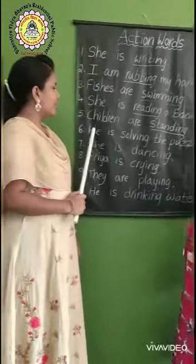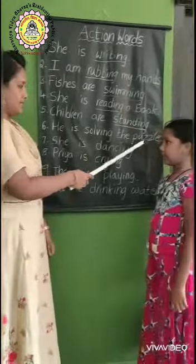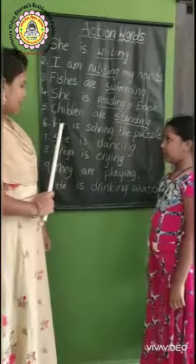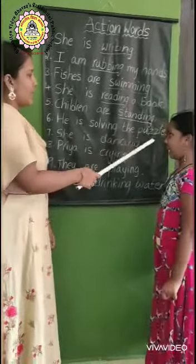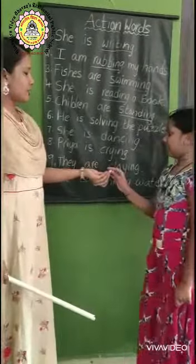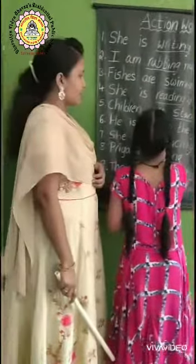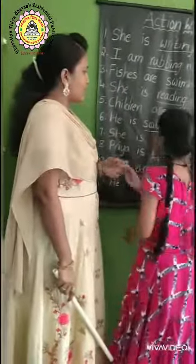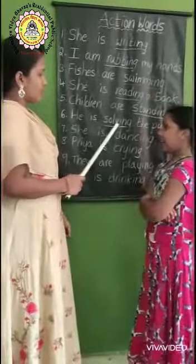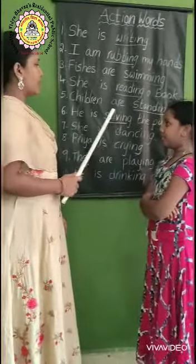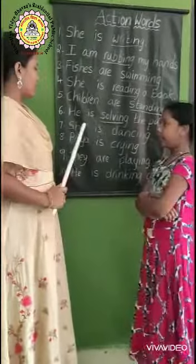Next example. He is solving the puzzle. Repeat it — he is solving the puzzle. Underline the action word here. Spell it out: S-O-L-V-I-N-G. Solving. What is the action word here? Solving. Very good.